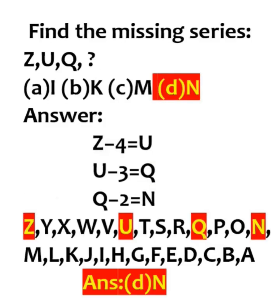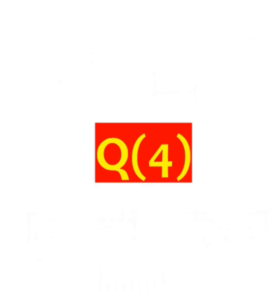Z, U, Q — what is the next letter? Between Z and U, 4 letters are missing. Between U and Q, 3 letters are missing. So between Q and the next, 2 letters are missing — giving N. The answer for this question is N.